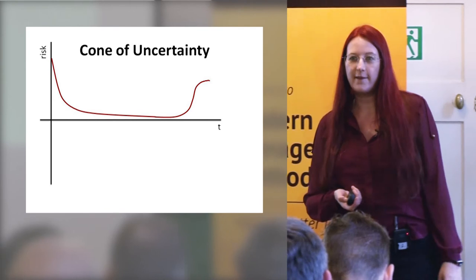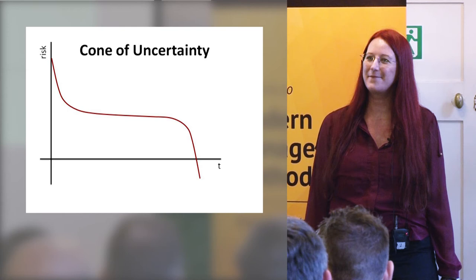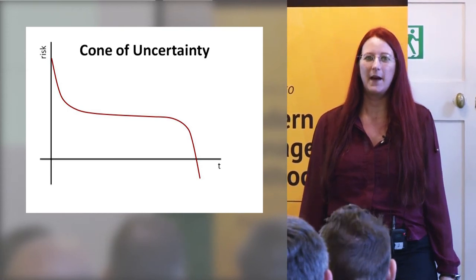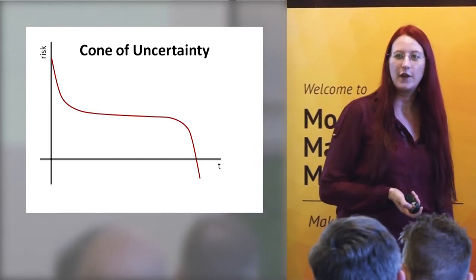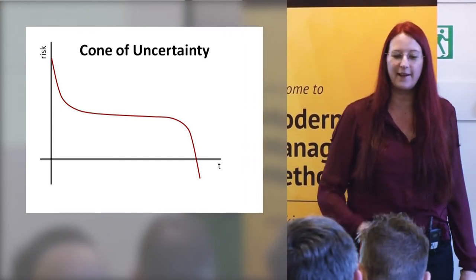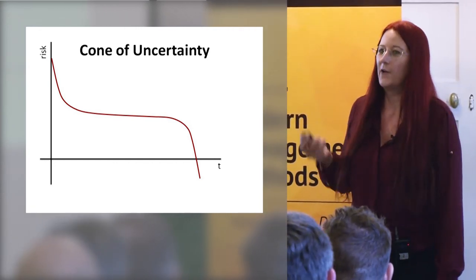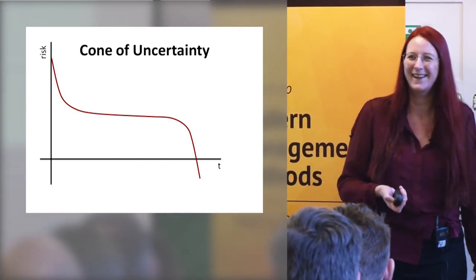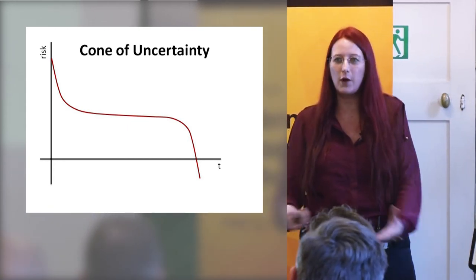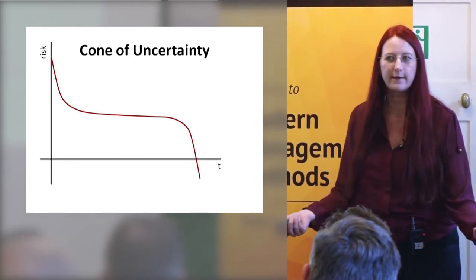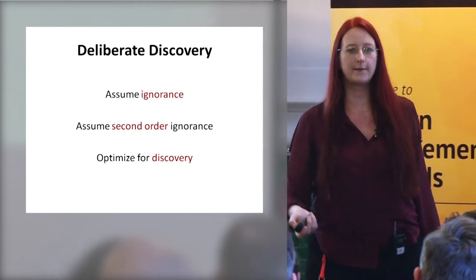Here's what your cone of uncertainty actually looked like. If you make these discoveries right at the end, you frequently find yourself in chaos, and your uncertainty will reduce very rapidly as your project folds — or your company folds. This is what happens when you make discoveries close to the end: you've got no time to respond, you've got no options to respond. So I want to introduce you to the concept of deliberate discovery.